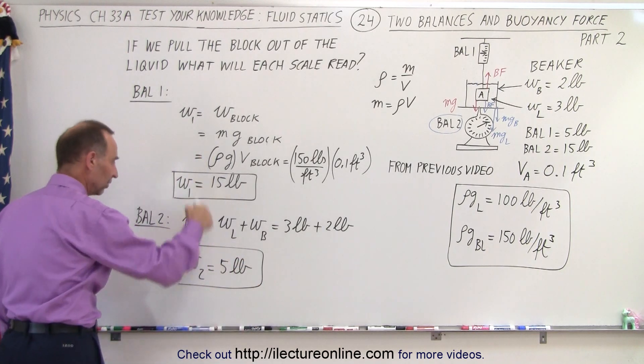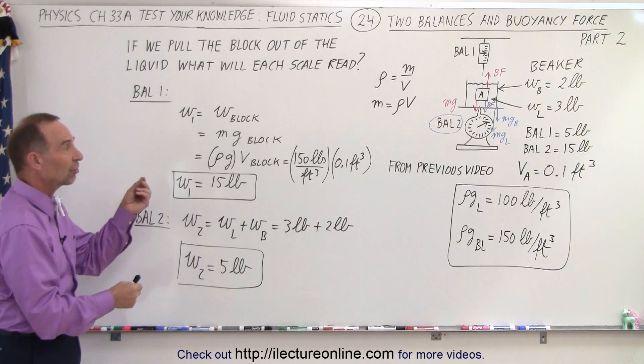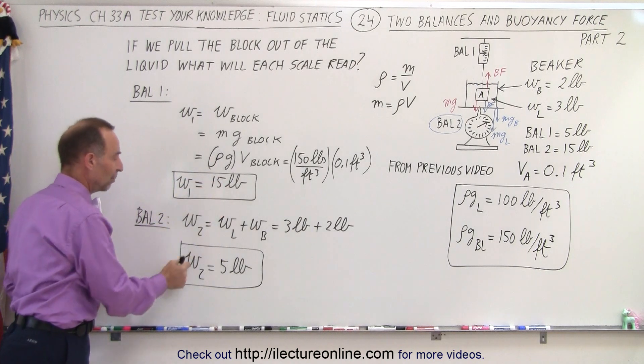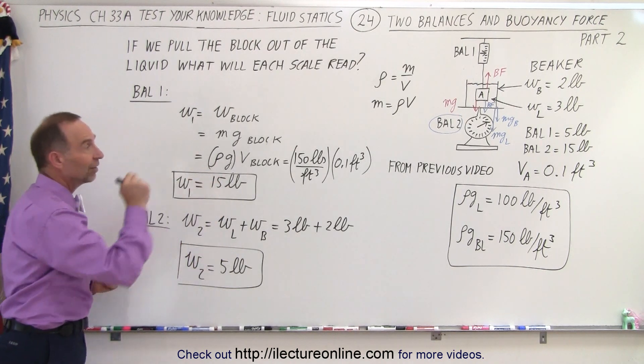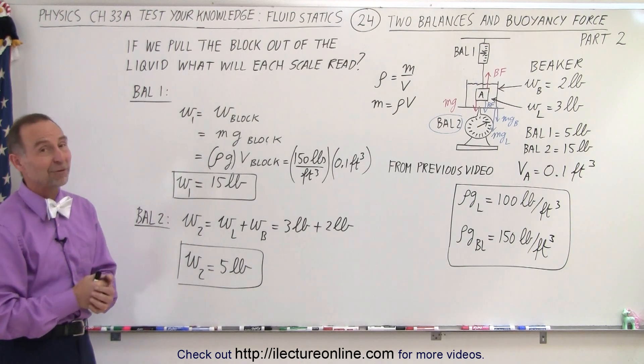And notice that together they still add up to 20 pounds like before, but notice that the weights have now shifted. Balance 1 will now read 15 pounds and balance 2 will now read 5 pounds instead of 5 and 15. And that is how we figure that out.